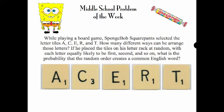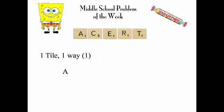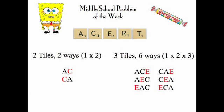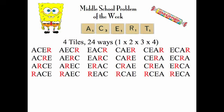Let's take a look at the first question. Some of you know how to do this already, but for those who don't, let's explain it here. If he just had one tile, he could arrange it one way. With two tiles, he could arrange them two ways — one times two. With three tiles, six ways — one times two times three. And with four tiles, quite a few more ways — one times two times three times four.